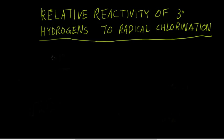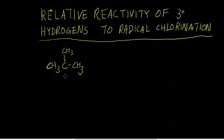In this video, we're going to examine the relative reactivity of tertiary hydrogens to radical chlorination by looking at the products of radical chlorination of 2-methylpropane. 2-methylpropane is this compound here, basically propane with a methyl group attached. When you put it with some chlorine gas and irradiate that mixture with UV light, here's the product distribution that you'll observe.